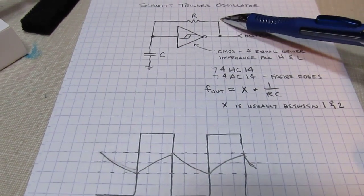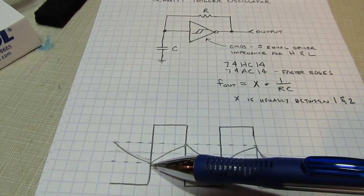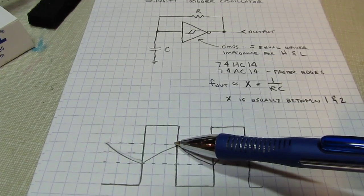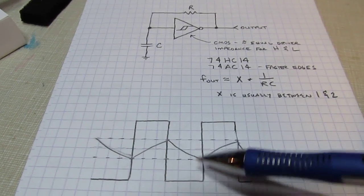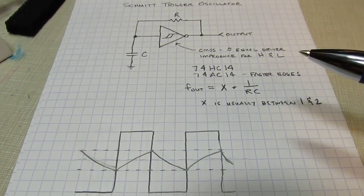Now, with this output going high, we're going to now charge up that capacitor through this resistor. So we get an RC charge through here until we hit the upper threshold, and the output changes state, and the process repeats itself. So that's typically how the oscillator works.